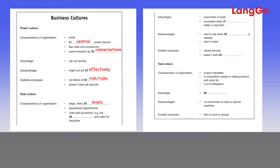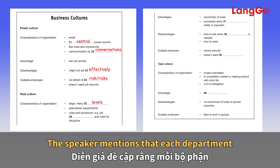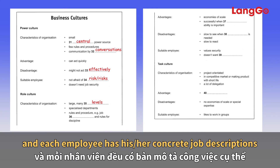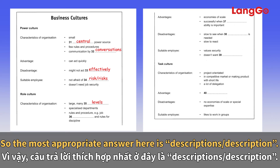Question 36 — rules and procedures; for example, jobs and rules for discipline. The speaker says everyone's job is controlled by sets of rules and procedures — for example, there are specific job descriptions and rules for discipline. Each department is managed by a group of managers, and each employee has concrete job descriptions, so the most appropriate answer is 'descriptions'.